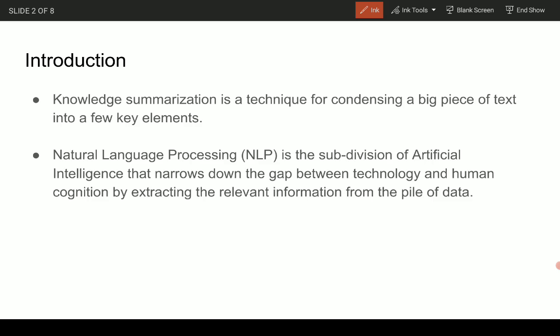We have already discussed that NLP is a subdivision of artificial intelligence that narrows down the gap between technology and human cognition by extracting relevant information from the pile of data. In the present work regarding friction stir welding of aluminum alloys, the data was collected from abstracts available on scholarly research papers.